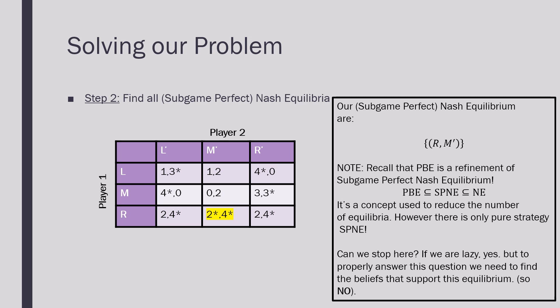Now this is a single equilibrium that we're solving for. And it's important to note that when we solve for Perfect Bayesian Equilibrium, it's going to be a refinement of Subgame Perfect Nash Equilibrium. Perfect Bayesian Equilibrium is going to be a subset of Subgame Perfect Nash Equilibria, and Subgame Perfect Nash Equilibria is going to be a subset of Nash Equilibrium.